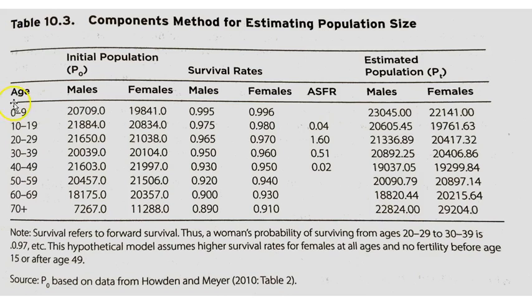Here we have the different age intervals, with male and female separated out, and survival rates. We have age-specific fertility rates, which come in only a few categories assuming that there is only fertility between the ages of 15 and 49, and then over here we have the estimated population for males and females calculated separately for each of the different age intervals.